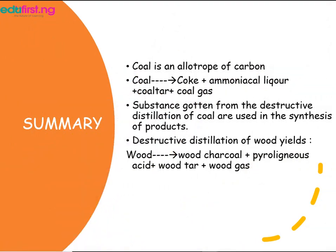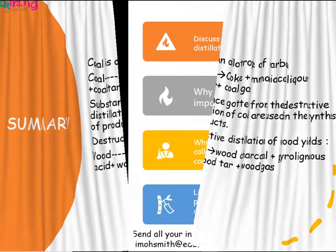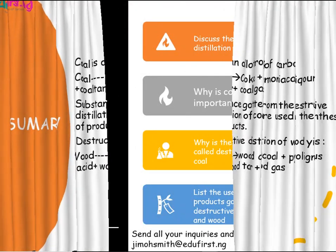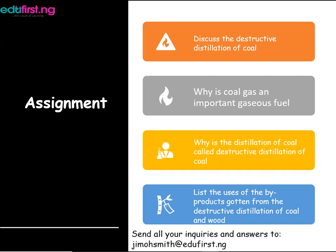In summary, coal is an allotrope of carbon; when it undergoes destructive distillation, it yields coke, ammoniacal liquor, coal tar, and coal gas, which are used in the production of other products. Wood yields wood charcoal, pyroligneous acid, water, and wood gas when it undergoes destructive distillation. Thank you for today's class.